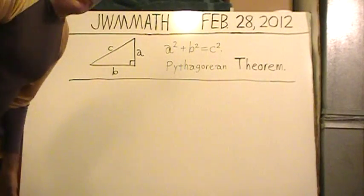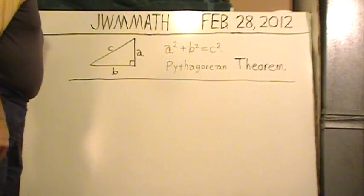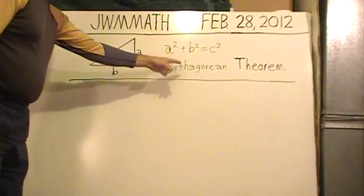Greetings. Here we have a Pythagorean Theorem: A squared plus B squared equals C squared.